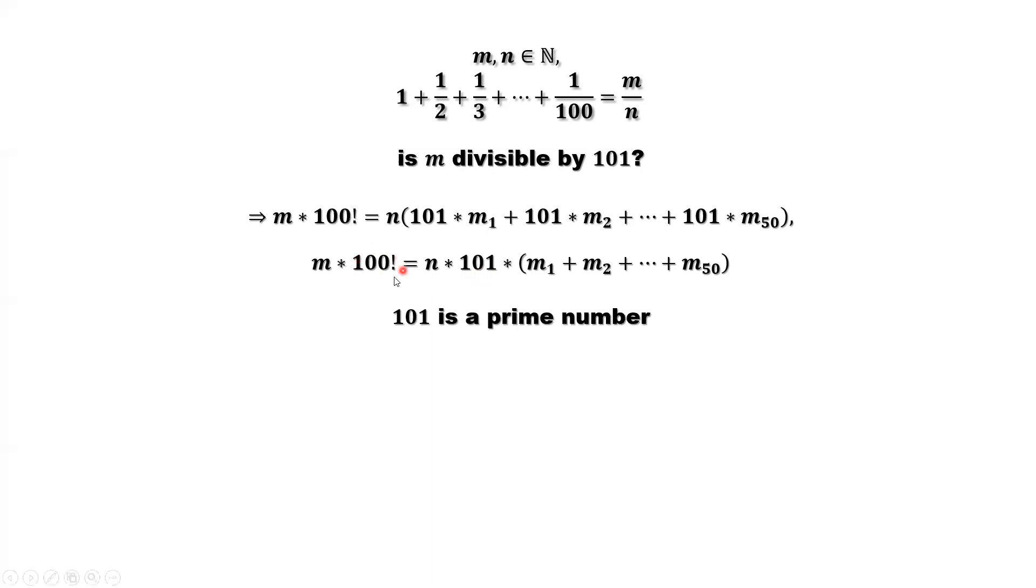So here, 100 factorial does not have a factor of 101. So here, this implies m is divisible by 101.